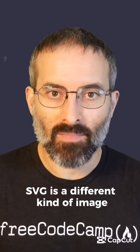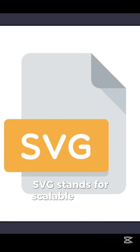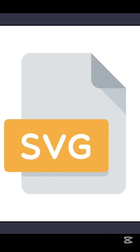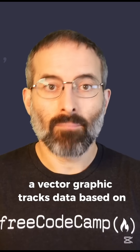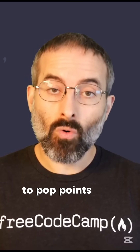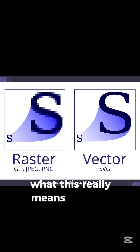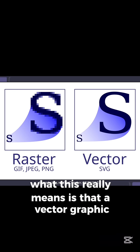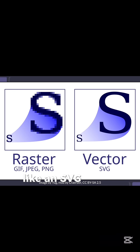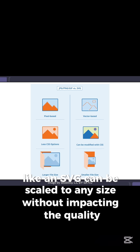SVG is a different kind of image. SVG stands for scalable vector graphic. A vector graphic tracks data based on paths and equations to plot points, lines and curves. What this really means is that a vector graphic like an SVG can be scaled to any size without impacting the quality.